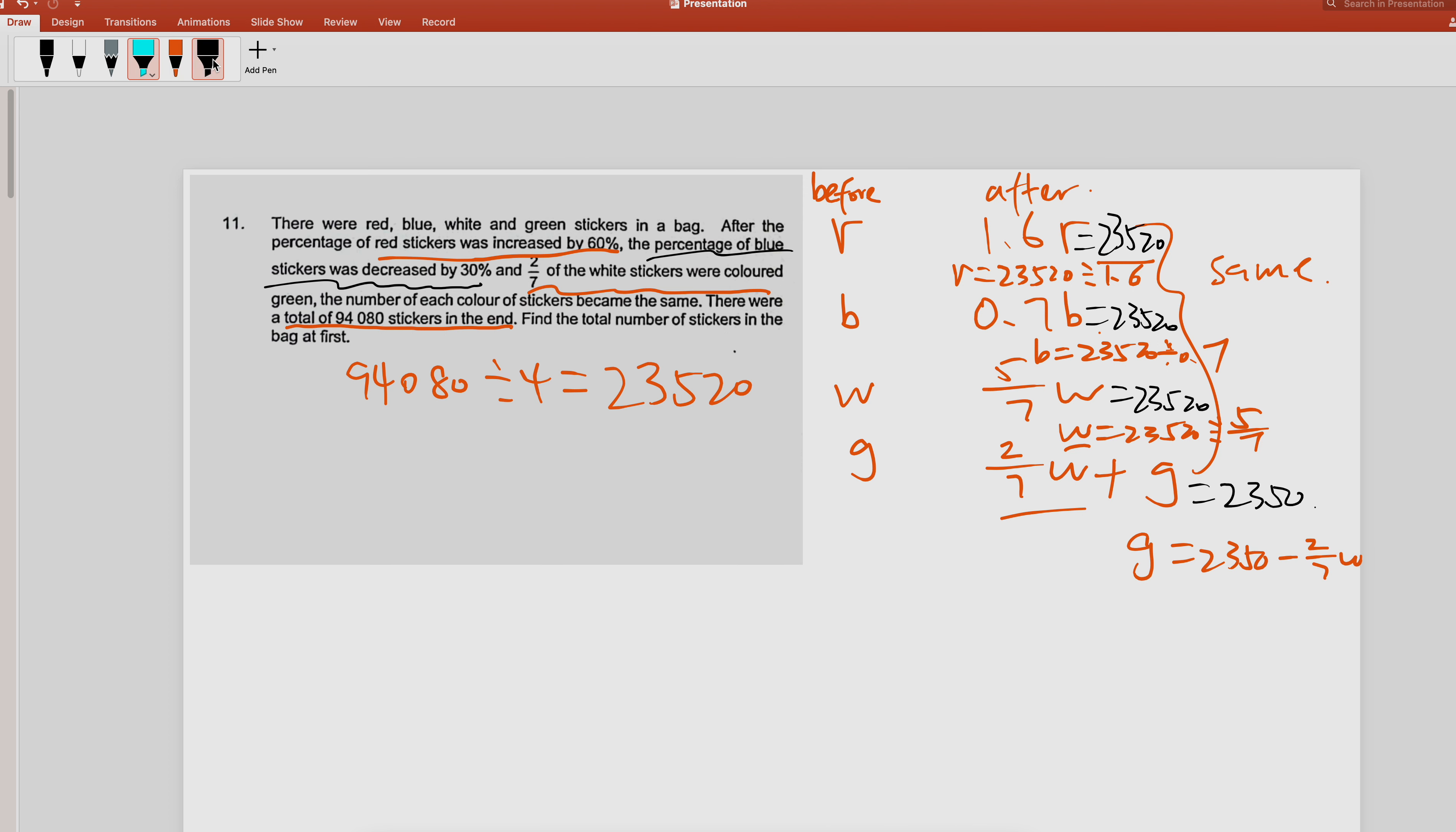So in this way you'll have your red, your blue, your white, and your green. Just add all this up and you'll get the total number at first.